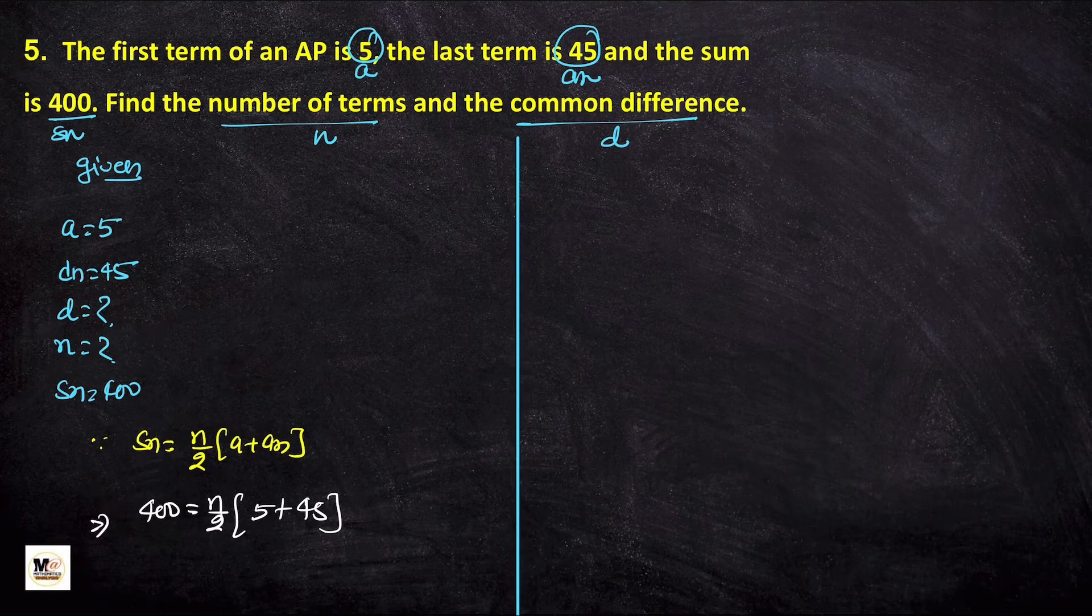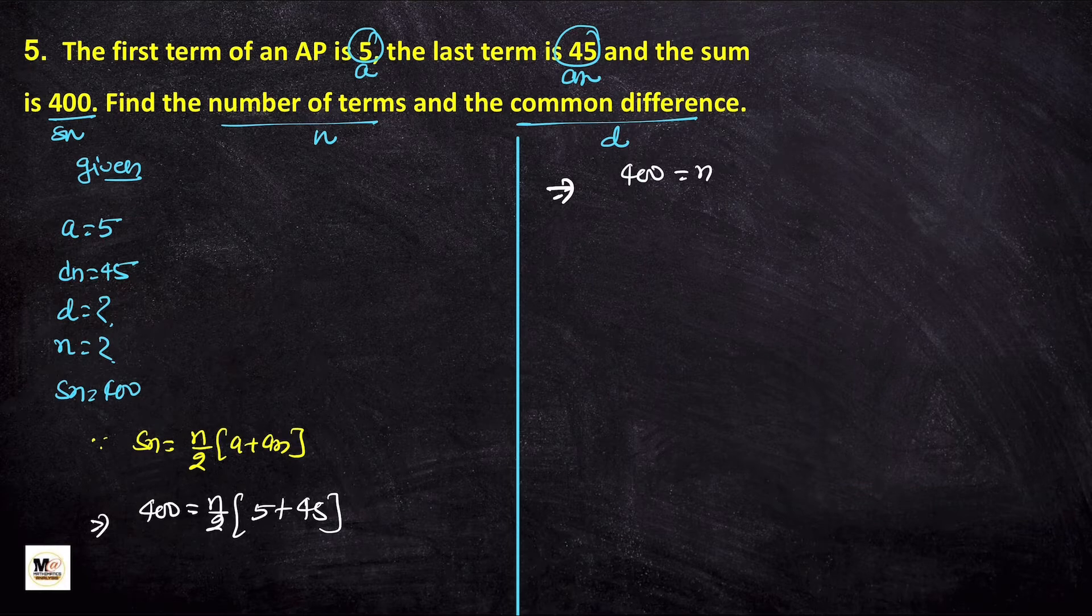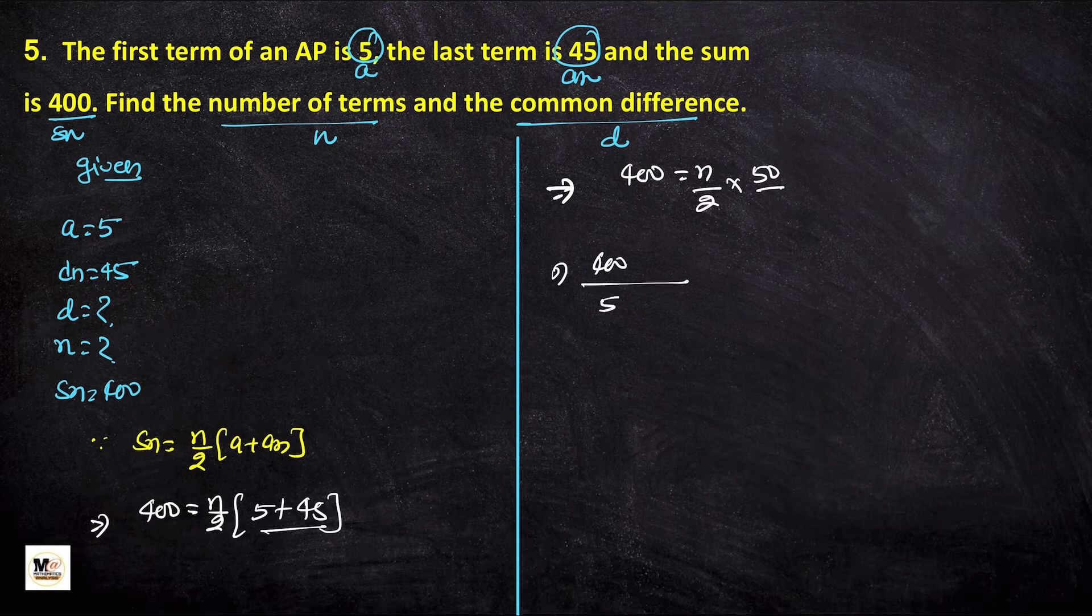So we have 400 equals n by 2 times 50. Now we add 45 and 5 to get 50, then solve: 400 equals 25n. Dividing both sides, we get n equals 16.